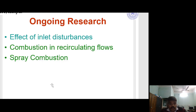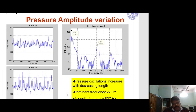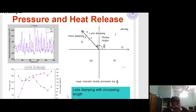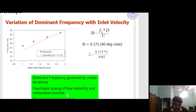Ongoing research — effect of inlet disturbance: Research involves combustion in recirculating flows and spray combustion. A tunable inlet track creates disturbances of varying frequency. Studies use bluff-body stabilized flames, with unsteady pressure and heat release measurements. Findings include pressure amplitude variation, pressure and heat release coupling, low-frequency variation with inlet length, and variation of dominant frequency with inlet velocity. The dominant frequency is governed by vortex dynamics and feedback, and blocking of flow instability and the combustion process shows that the phase relationship leads to enhancement of combustion oscillations.